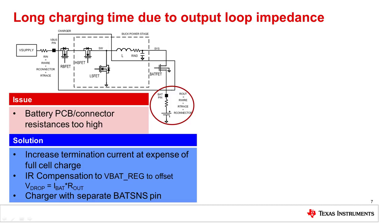Just like input loop impedance can cause longer charging times, it's also possible for the output side — the connection from the BAT pin of the charger to the battery itself — to have higher resistance than expected, causing longer than desired charging times. What happens in this case is that the wire, the PCB trace, or the connector connecting the battery to the end equipment, or even the battery's own internal impedance, can cause the voltage seen at the BAT pin to be higher than the cell voltage. Therefore the charger thinks the cell is fully charged when it's not, and enters CV mode or constant voltage mode too early.